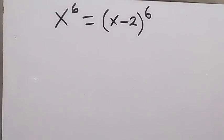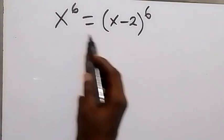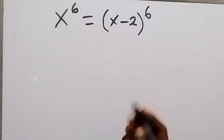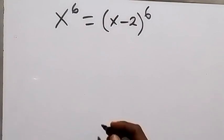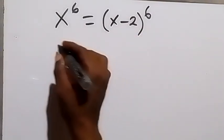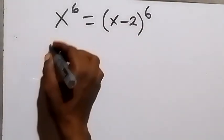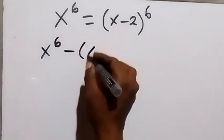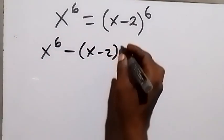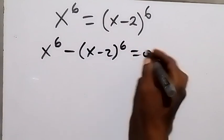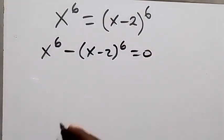Hello, you are welcome. How to solve this problem: x raised to power 6 equals x minus 2 raised to power 6. From here, let's take everything on the right to the left. We have x raised to power 6 minus x minus 2 raised to power 6 equals to 0.